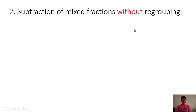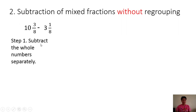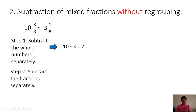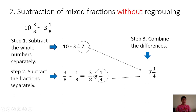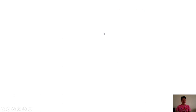We have subtraction of mixed numbers without regrouping: 10 and 3/8 minus 3 and 1/8. Step 1: subtract the whole numbers separately — 10 minus 3 is equal to 7. Step 2: subtract the fractions separately — 3/8 minus 1/8: 3 minus 1 is 2, copy the common denominator 8, giving 2/8. Since 2/8 is not in simplest form, we reduce it to 1/4. Step 3: combine the differences — 7 and 1/4. Therefore, 10 and 3/8 minus 3 and 1/8 is equal to 7 and 1/4.